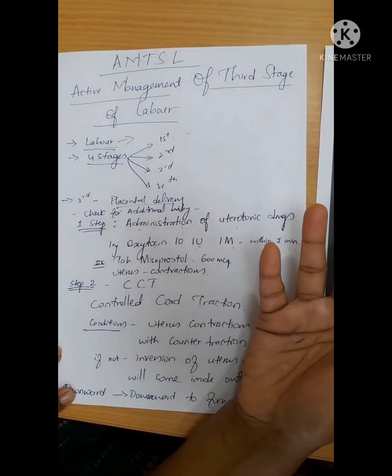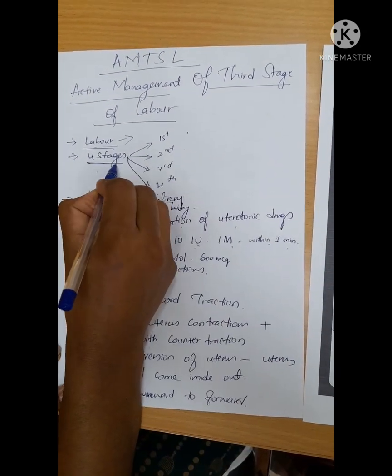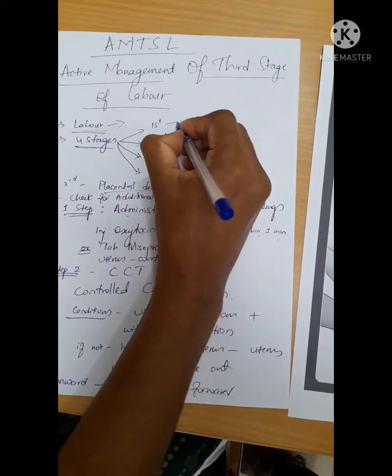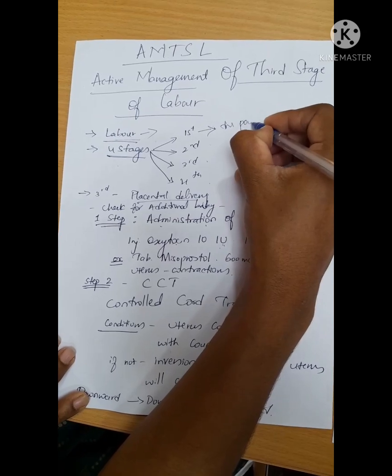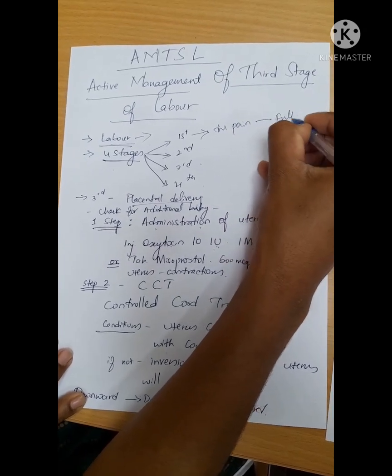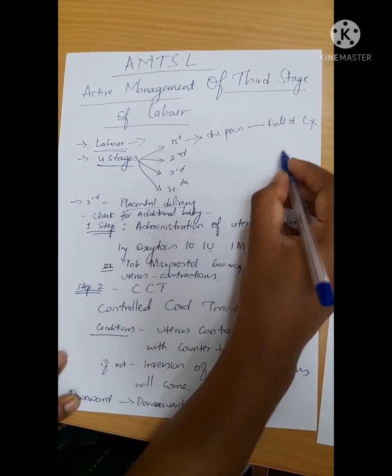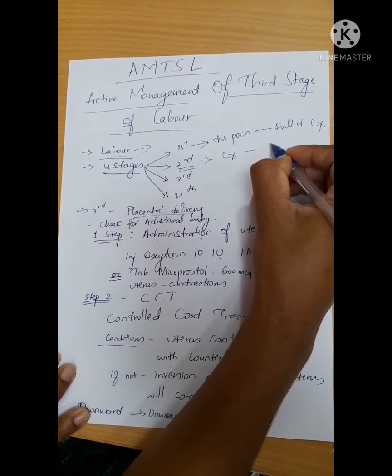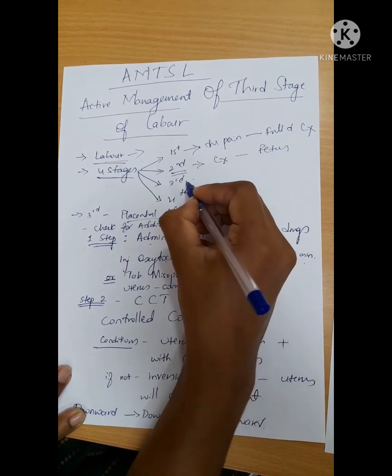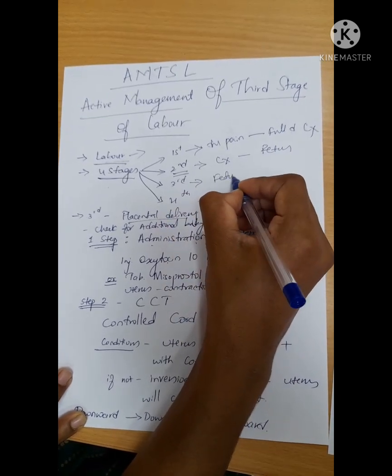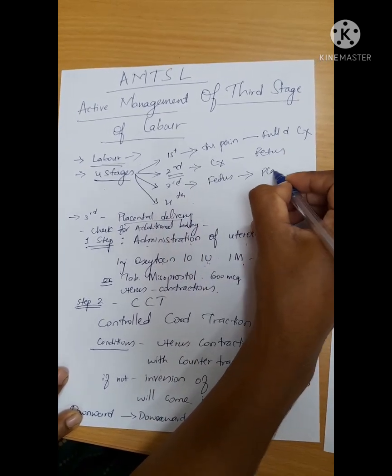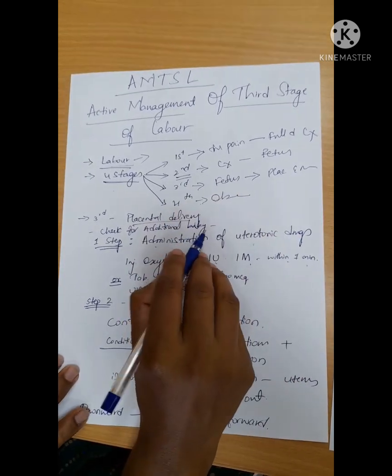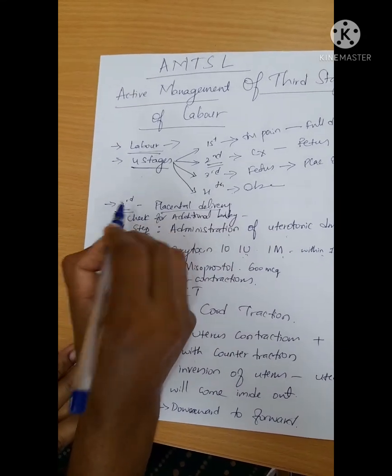There are mainly four stages: first stage, second stage, third stage, and fourth stage. First stage is from the start of true labor pain to full dilatation of cervix. Second stage is from full dilatation of cervix to expulsion of the fetus. Third stage is from expulsion of fetus to expulsion of placenta and membranes. Fourth stage is the observation phase.